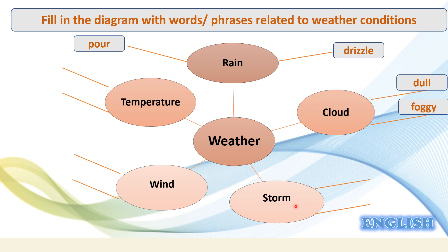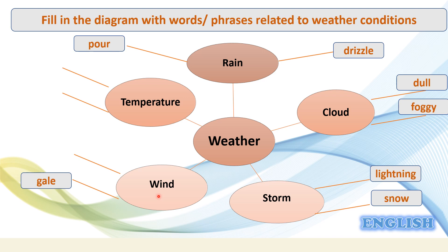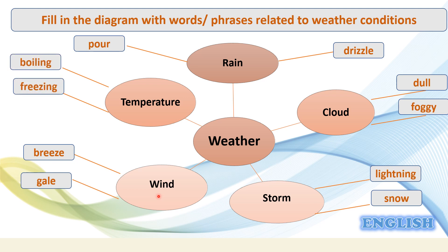For the word 'storm' we have 'lightning', which means bright flashes, and the word 'snow'. For 'wind', we have two types: a 'gale', which means a strong wind, and a 'breeze', which is a gentle or soft wind. As for temperature, we can say it's 'freezing' or the opposite — it's 'boiling', which means it's very very hot.